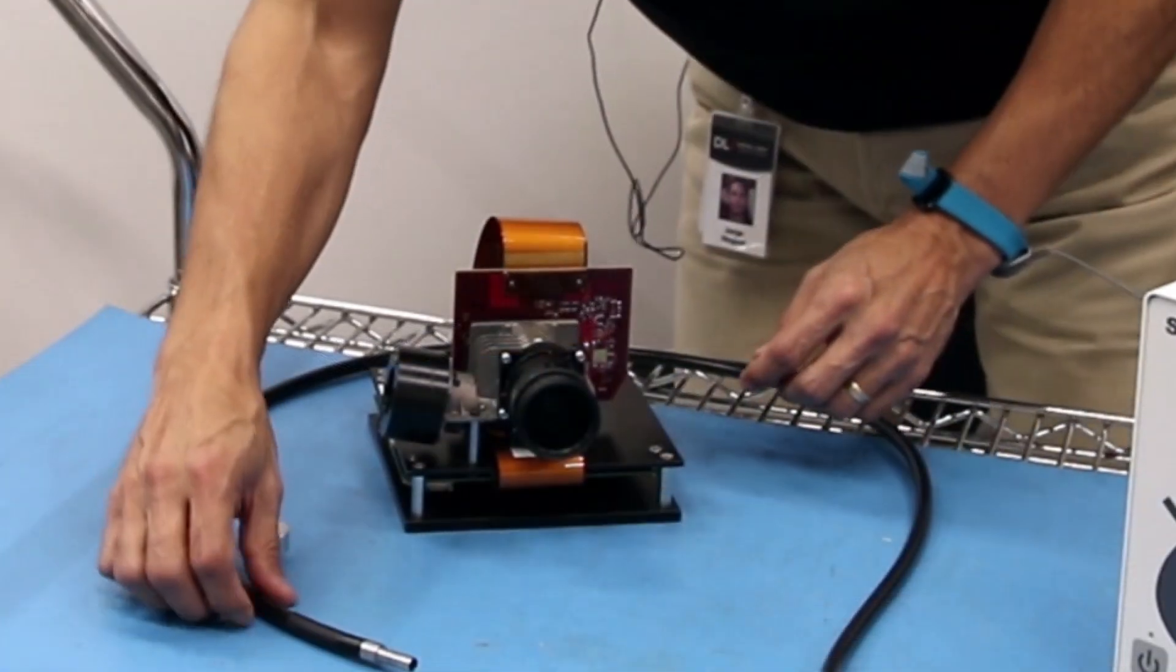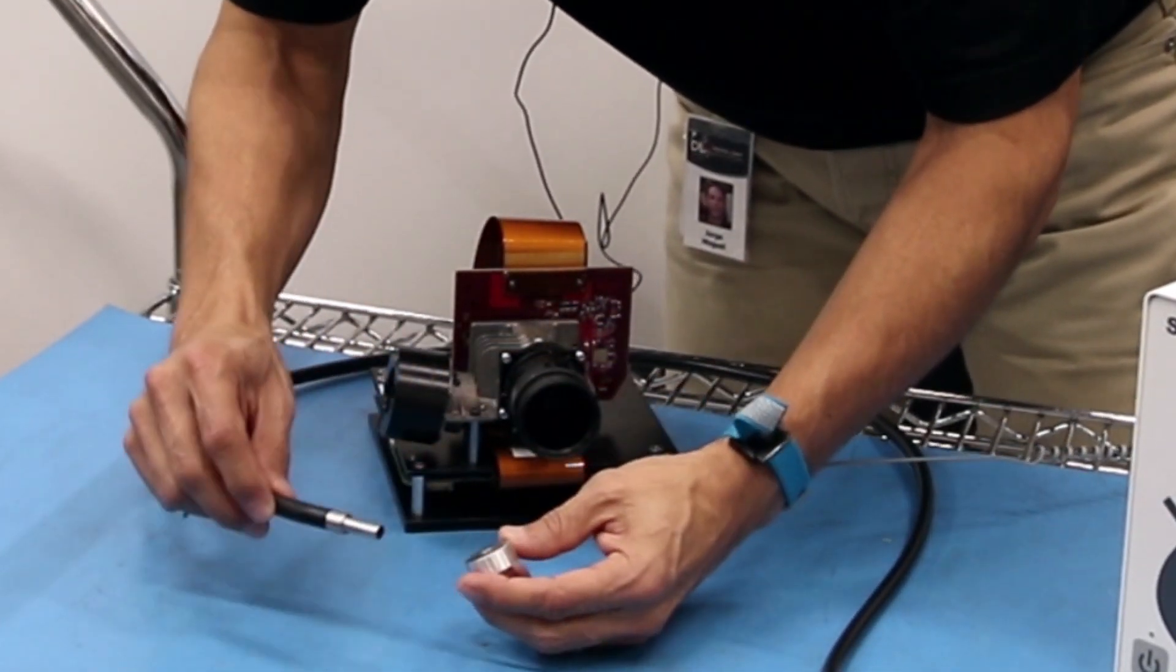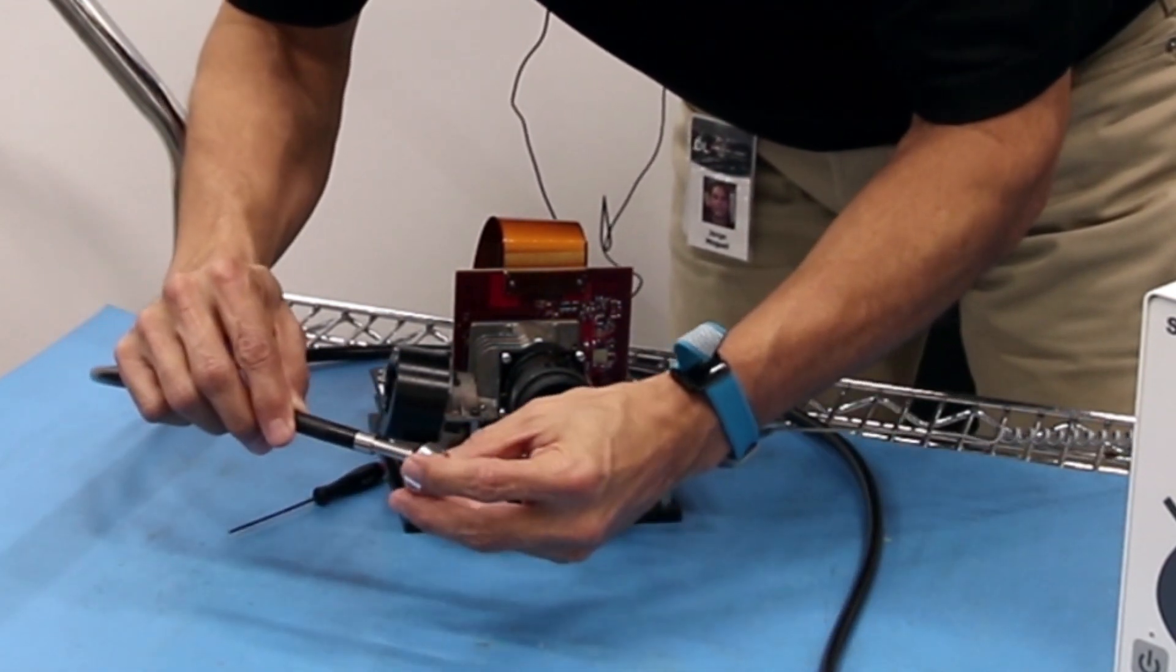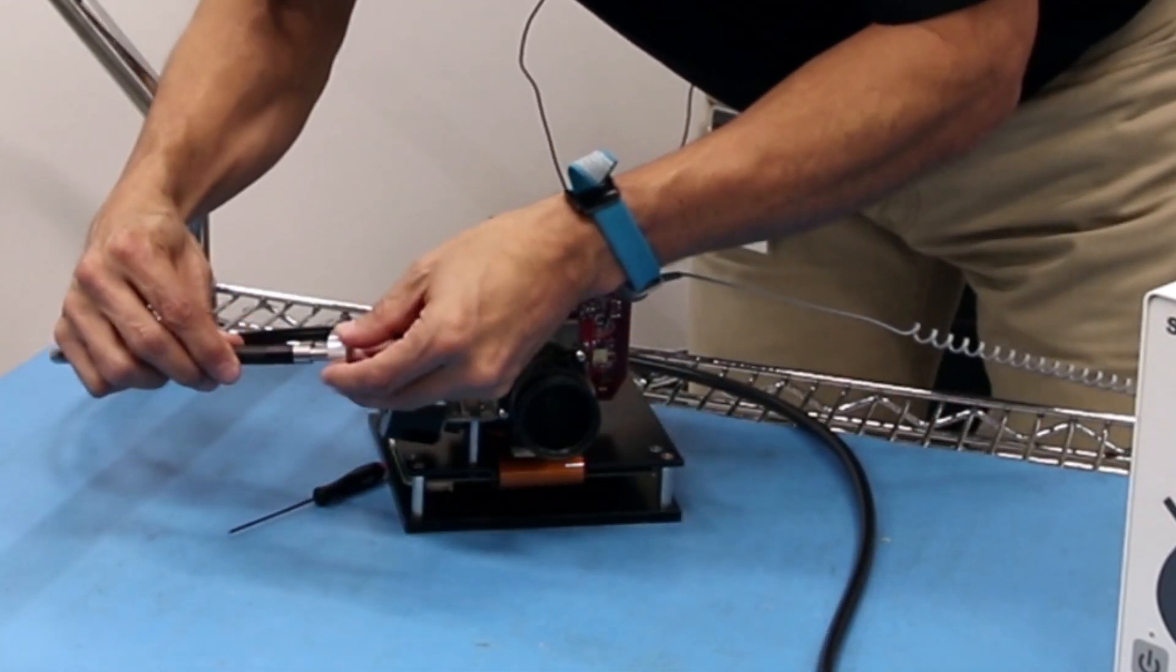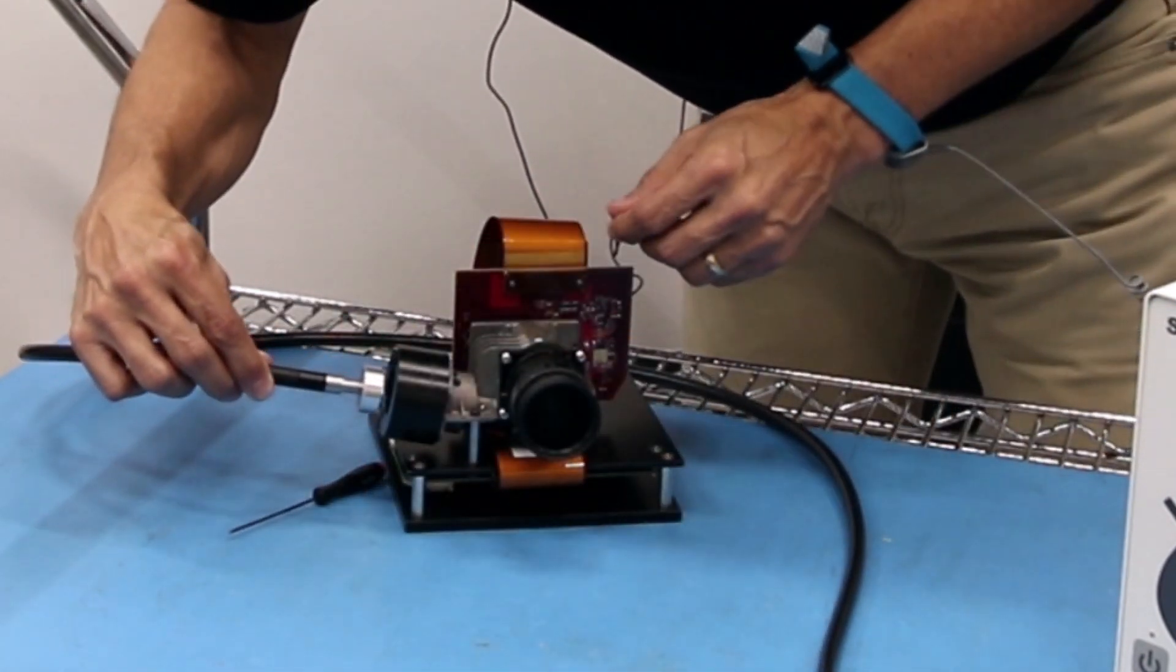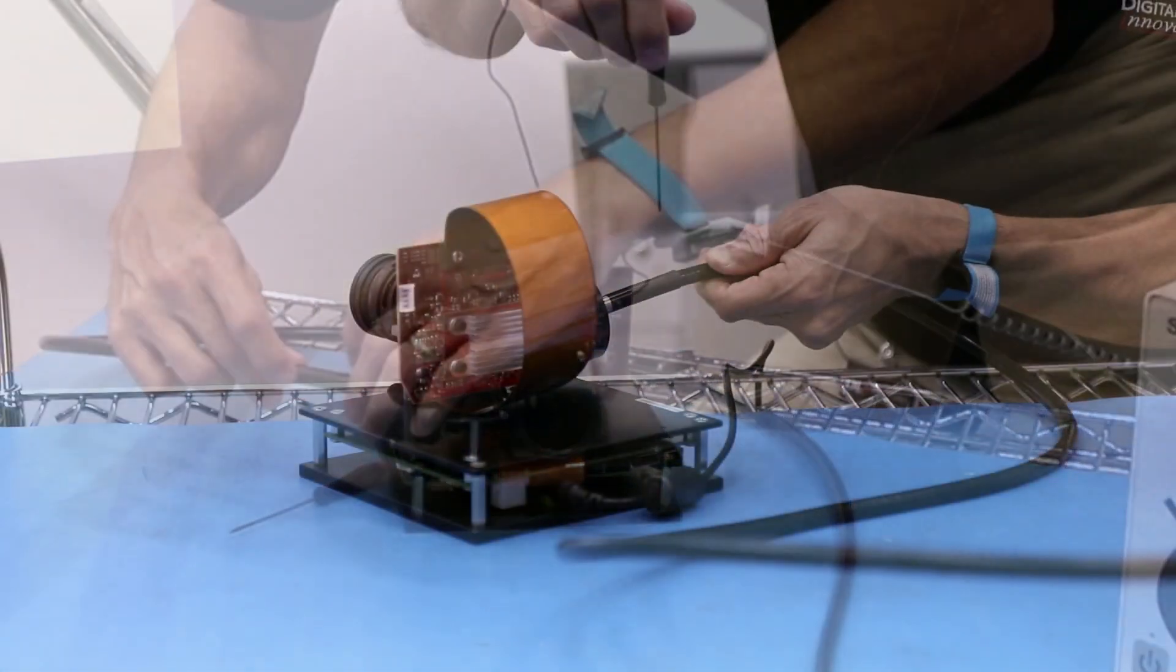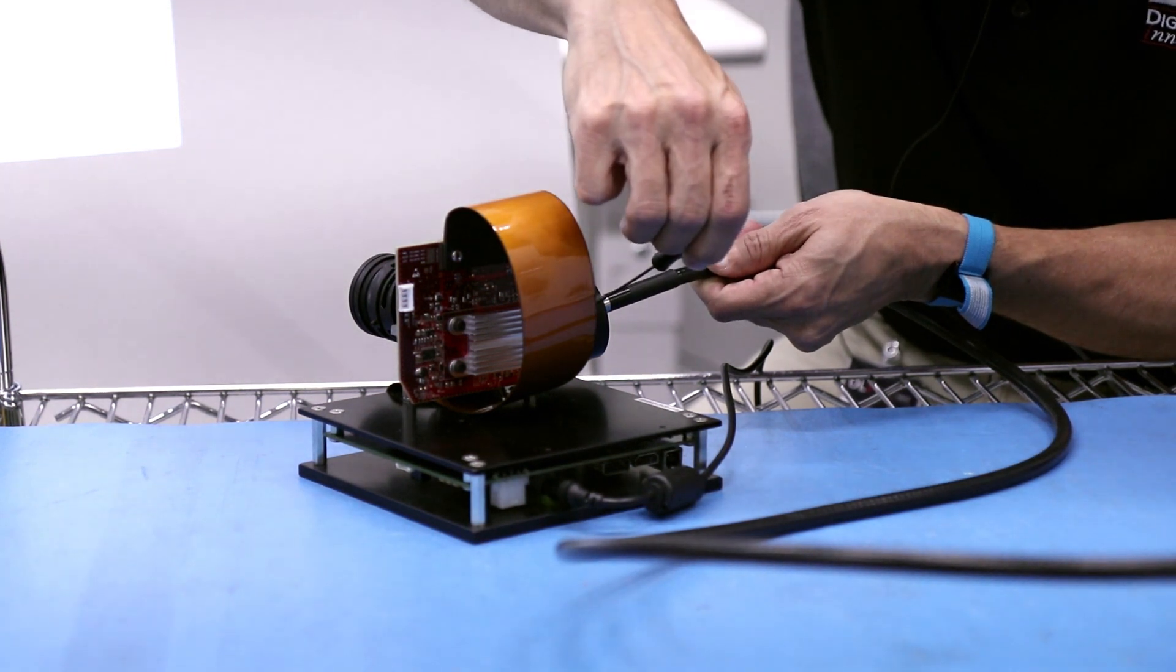Now that the fiber optic cable is in place we're going to implement similar steps on the optics bundle side. Take the loose end of the fiber optic cable and insert it into the ferrule adapter. Next insert the ferrule adapter into the fiber optic interface on the optics bundle. Use your 1.5 millimeter hex screwdriver to set the fiber in place.